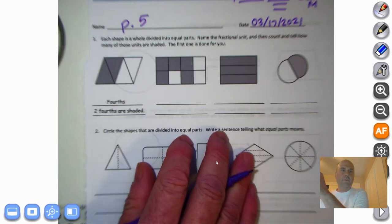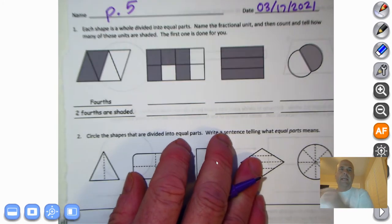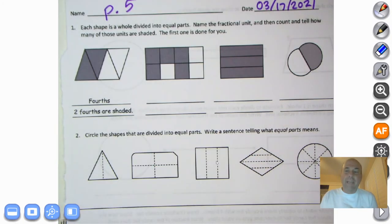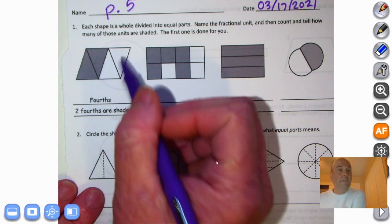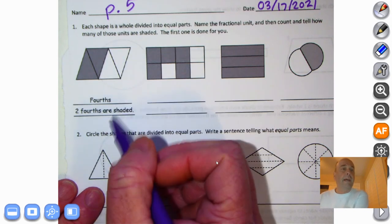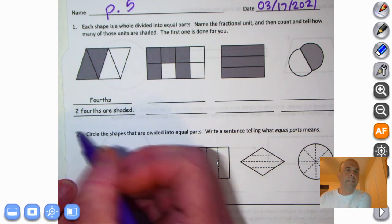Let's get right to number one. It says each shape is a whole divided into equal parts. Name the fractional unit and then count and tell how many of these units are shaded. The first one is done for you. Let's take a look at the first one. We have one, two, three, four. Those are called fourths. How many are shaded? Two fourths are shaded.